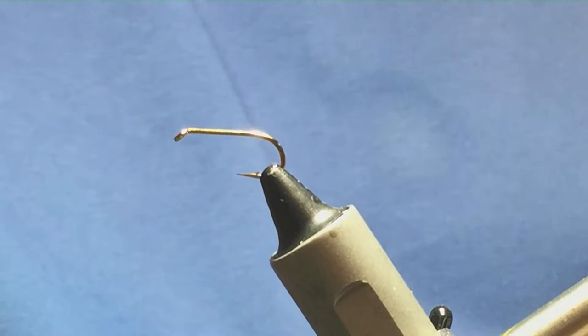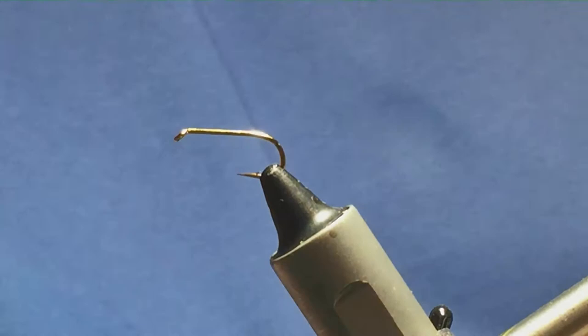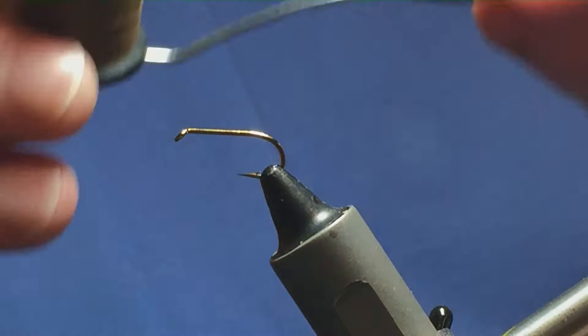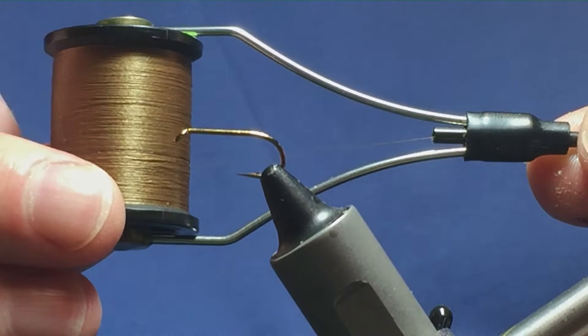Okay folks, I'm going to tie a wee gosling pattern. The hook I have on the vise is a size 10 standard heavyweight wet fly hook. The thread that I'm going to use to tie the fly is Uni-thread 8-0 in camel. It's just a nice light brown color.